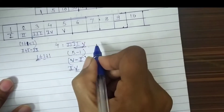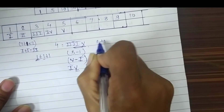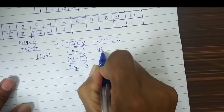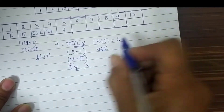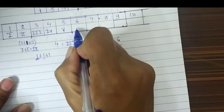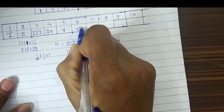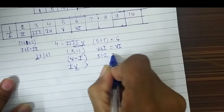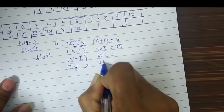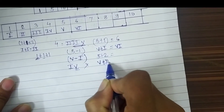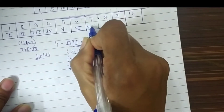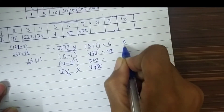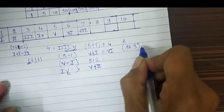For 6, we divide it as 5 plus 1 equals 6. For 5 we write V and for 1 we write I, so 6 is VI. For 7, it is 5 plus 2 — for 5 we write V, and for 2 we write two times I, so 7 is VII.